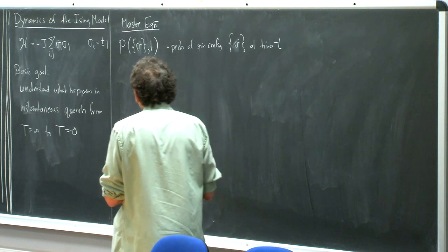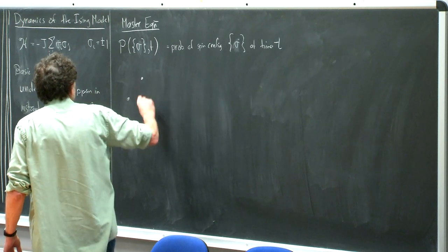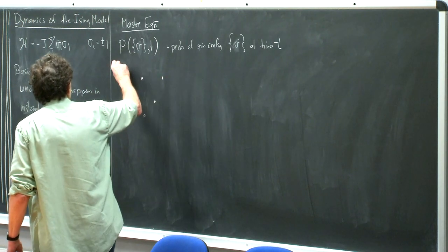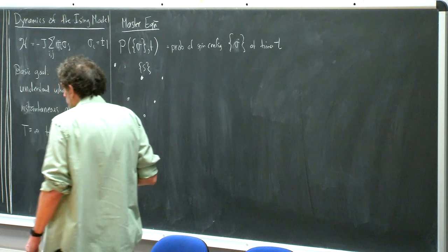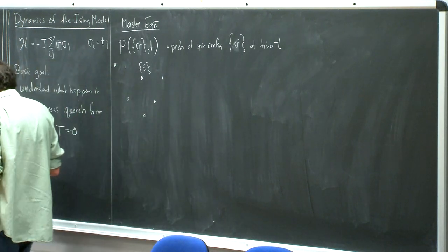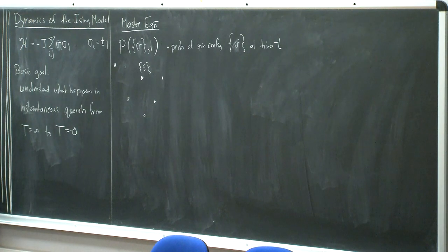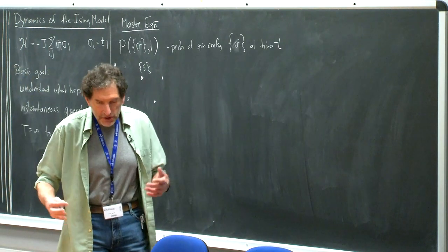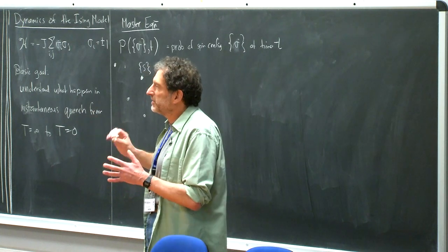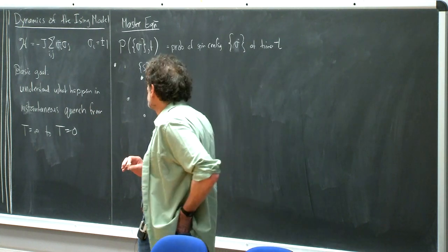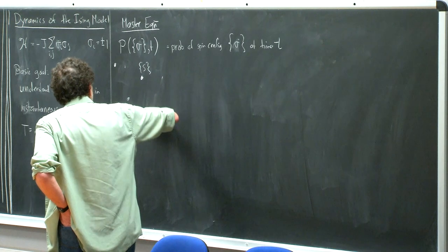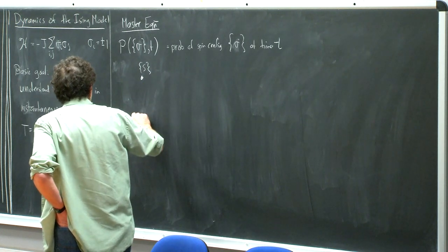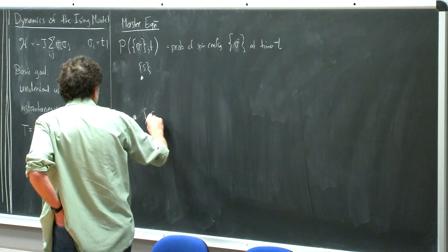The master equation is dP(σ,t)/dt = Σ_{σ'} W(σ'→σ) P(σ',t) - Σ_{σ'} W(σ→σ') P(σ,t). Here σ' represents states reached by flipping the i-th spin, so there are N neighboring states. The first sum is the total gain (influx into state σ), the second is total loss (outflow from σ).